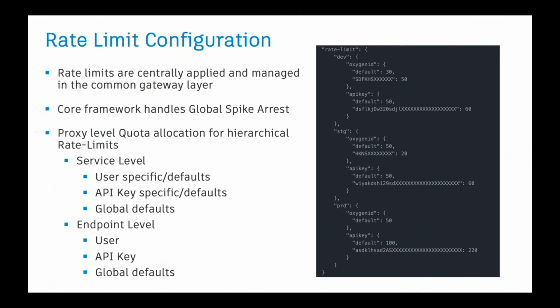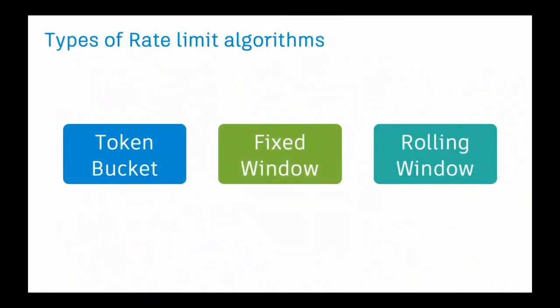So we've talked about rate limits — let's see what kind of rate limit algorithms get applied internally. There are a lot of algorithms available in the market, but I'm going to talk about only three: token bucket, fixed window, and rolling window log. For those who know Amazon-based API Gateway, it uses a token bucket-based algorithm.